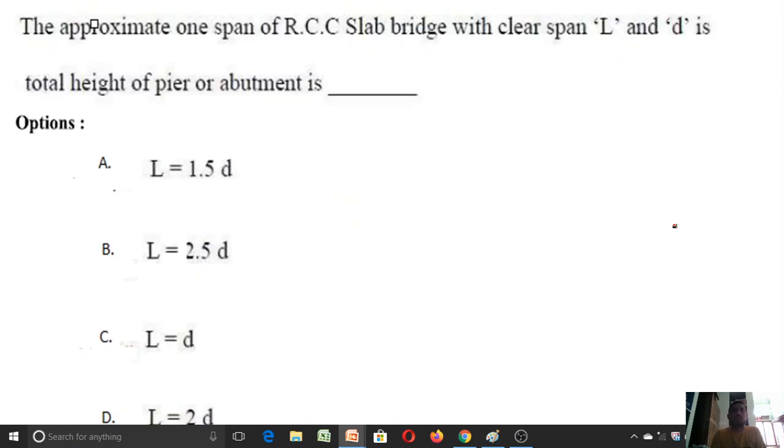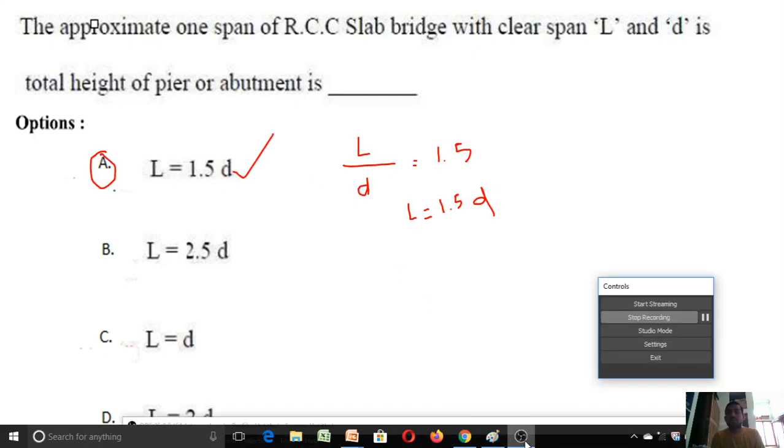The approximate one span of RCC slab bridge with clear span L and d is the total height of the pier or abutment. Generally, if the clear span is L and the total height of the abutment or pier is d, the ratio of L by d is considered as 1.5. From this I can write L equal to 1.5 times d. Let us see our options: option A, L equal to 1.5d. So answer A is correct for this question. Thank you, that's all for transportation engineering.